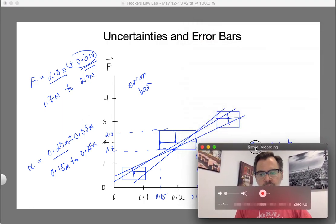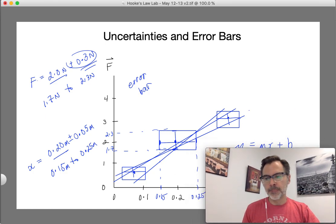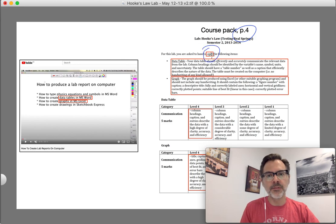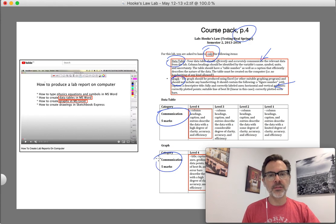Let's finish by taking a look at the rubric. In your course pack on page four, you're going to find a rubric. I want you to hand in only the following things: a data table with all the things you see here, and a graph with all the things you see here. There's a rubric, five marks for communication for the data table, and another five marks for the graph. If you're wondering how do I do this, don't worry. The video 'How to Produce a Lab Report on a Computer' has instructions for making data tables in Word and graphs in Excel with error bars. I'm going to show you how to do all that.